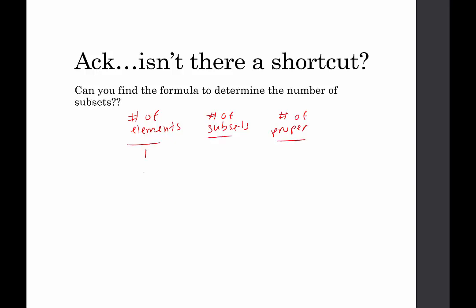When we have one element, let's say {a}, there would be two subsets: the null set and the set itself. So one element gives two subsets, and one proper subset. When we had two elements we had four subsets and three proper subsets. When we had three elements, we had eight subsets and seven proper subsets. When we had four elements, we had 16 subsets and 15 proper subsets.